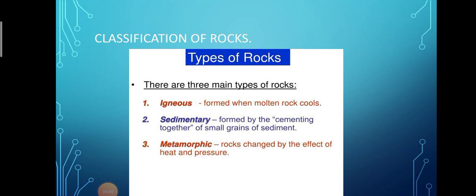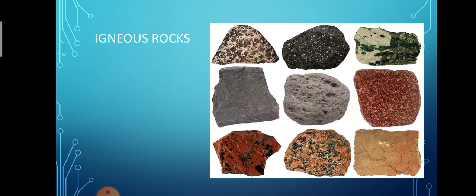Based on formation, appearance, and the type of minerals constituting them, rocks have been categorized into three major groups: igneous rocks, formed when molten rock cools; sedimentary rocks, formed by the cementing together of small grains of sediments; and metamorphic rocks, which are rocks changed by the effects of heat and pressure.